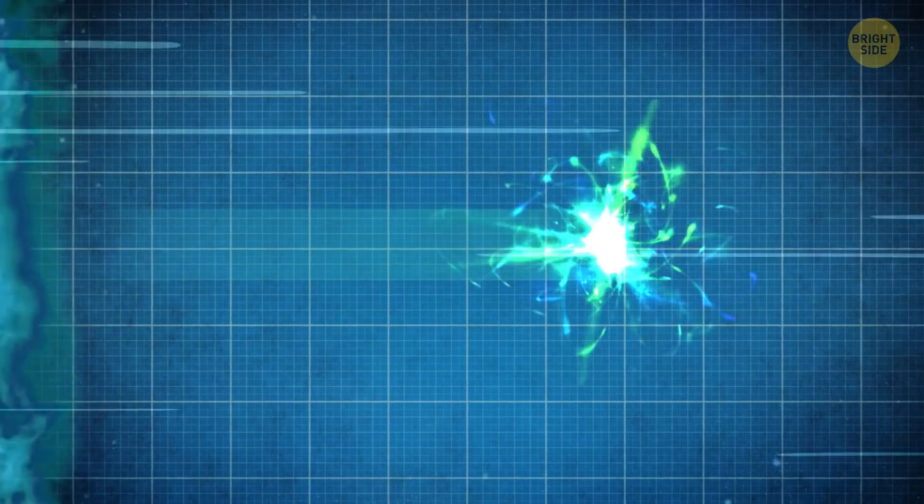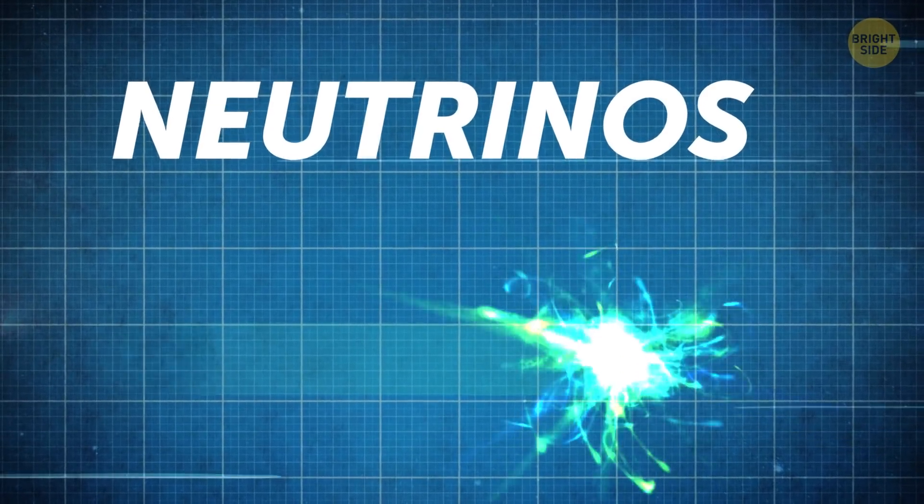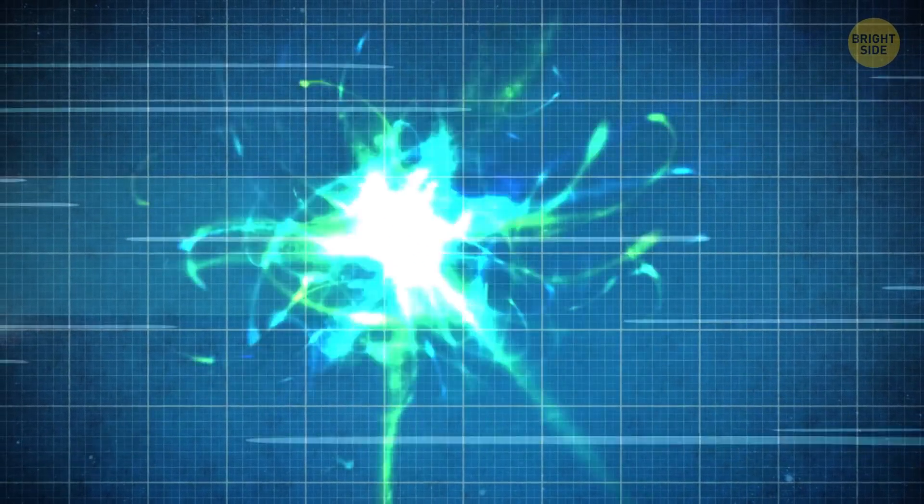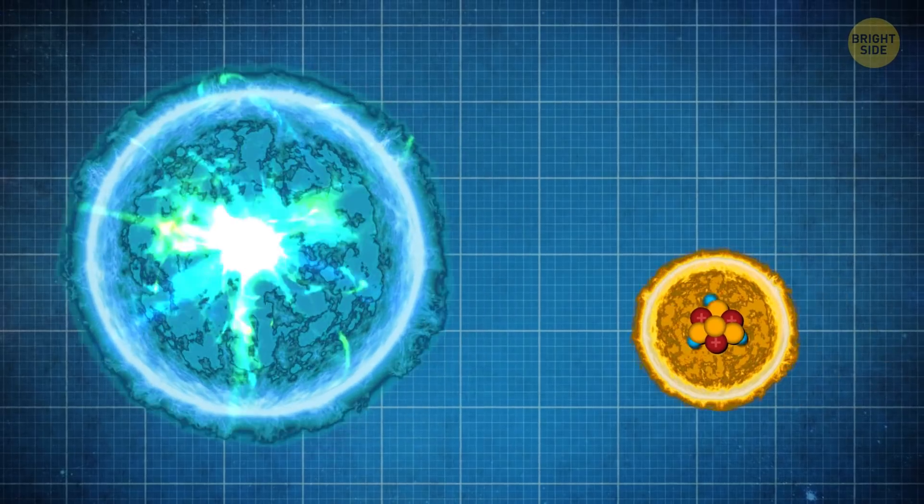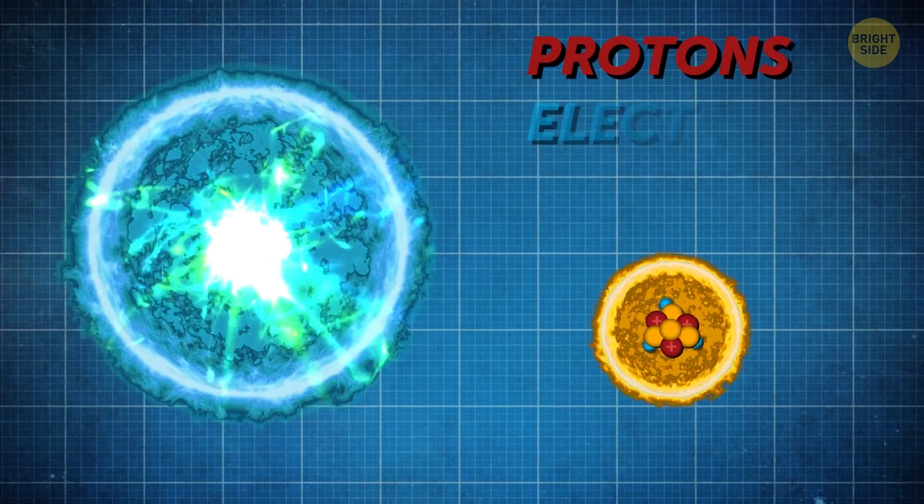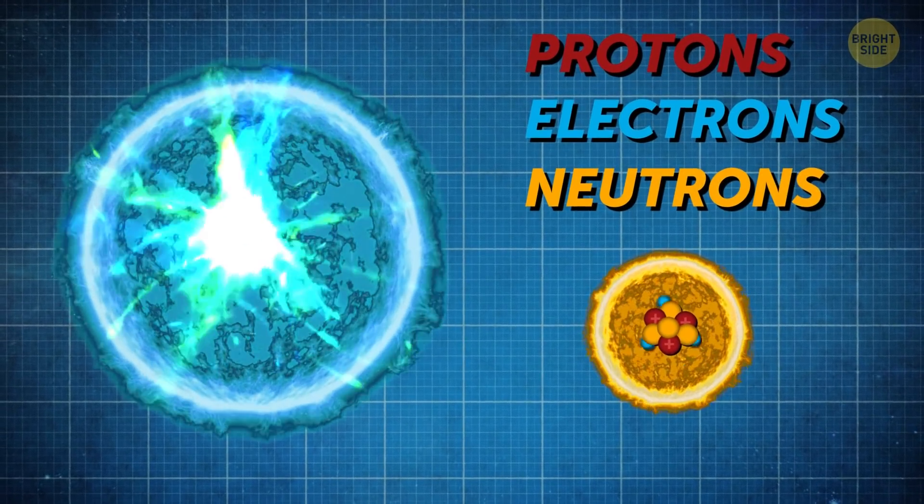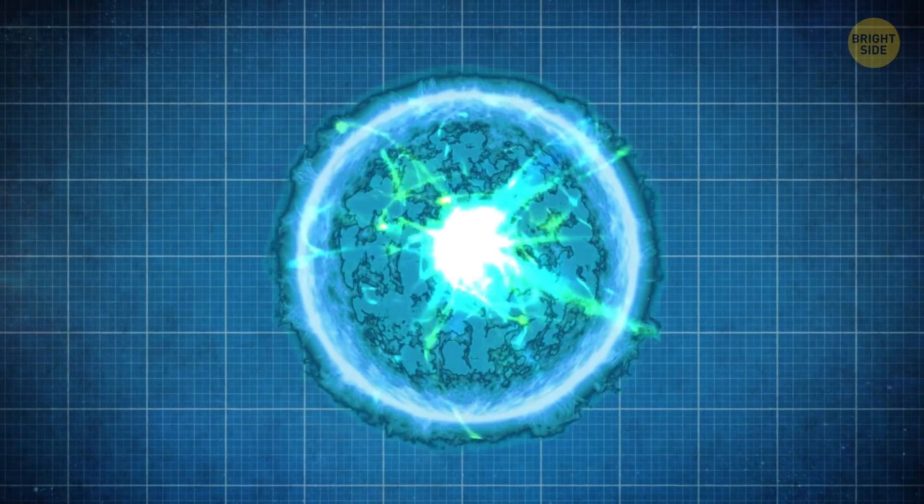Energy is leaving the star in the form of neutrinos, particles that are created when positively charged protons turn into neutrons. During a supernova explosion, the star emits almost 10 times more neutrinos than the number of protons, electrons, and neutrons in the Sun. No wonder such conditions give birth to something truly scary.